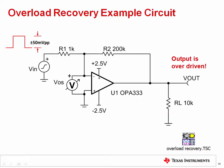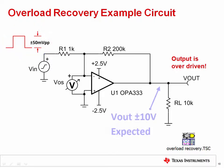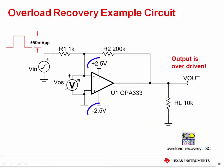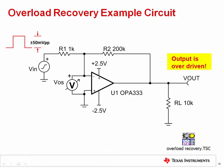Let's simulate the overload condition. In this example, we apply a plus or minus 50 millivolt peak-to-peak square wave to an inverting amplifier with a gain of minus 200 volts per volt. The expected output is plus or minus 10 volts peak-to-peak. Since the power supplies are only plus or minus 2.5 volts, it is clear that the output is driven well beyond the output swing limitations and thus overloaded. In the following slide, we'll look at the simulated transient response showing how the op-amp recovers from this overload.